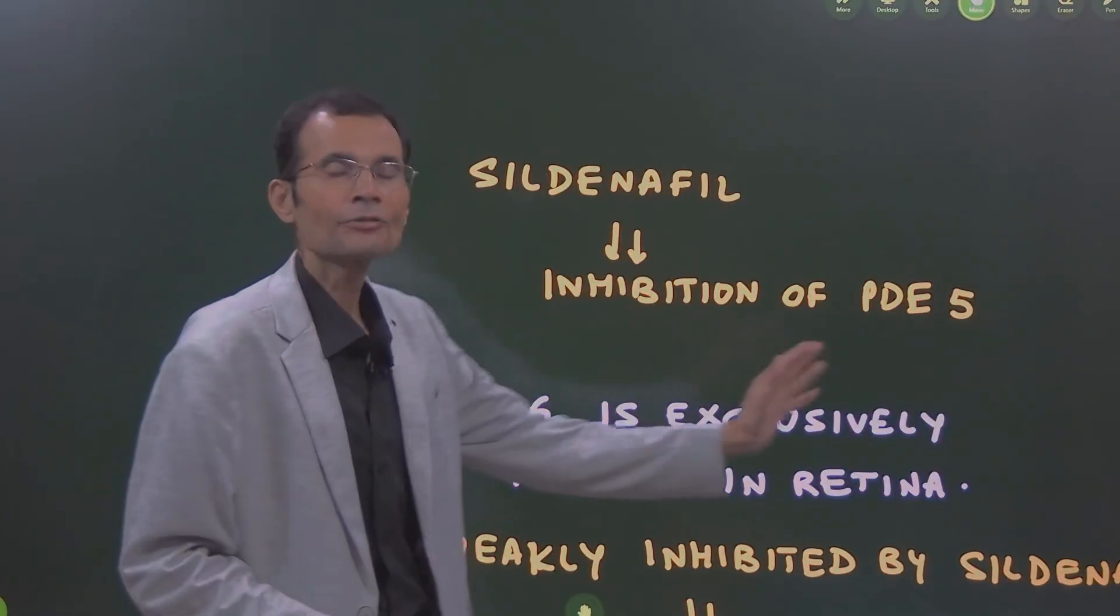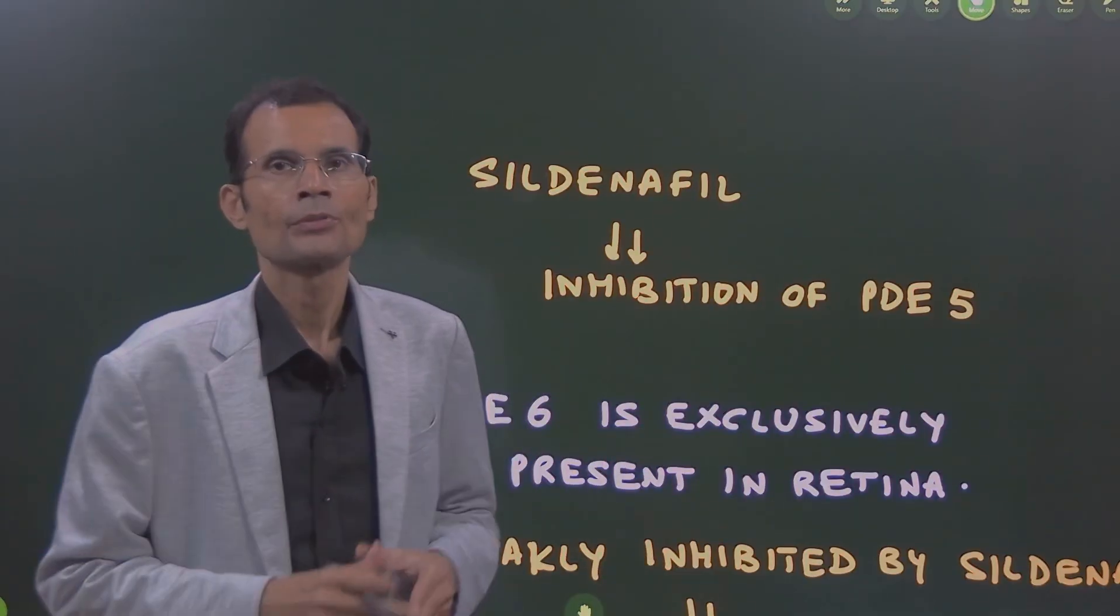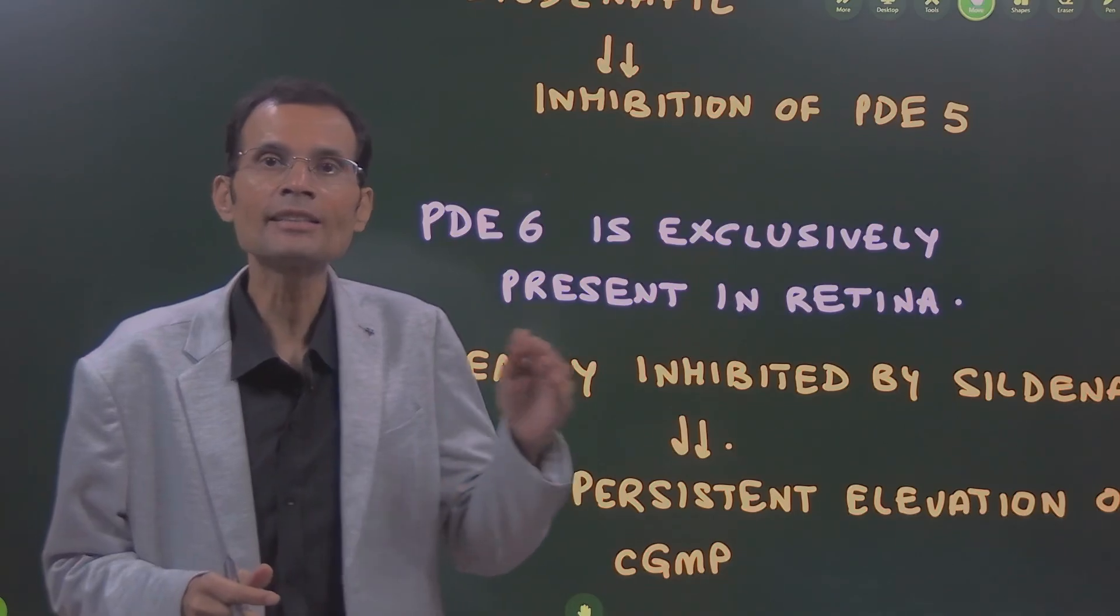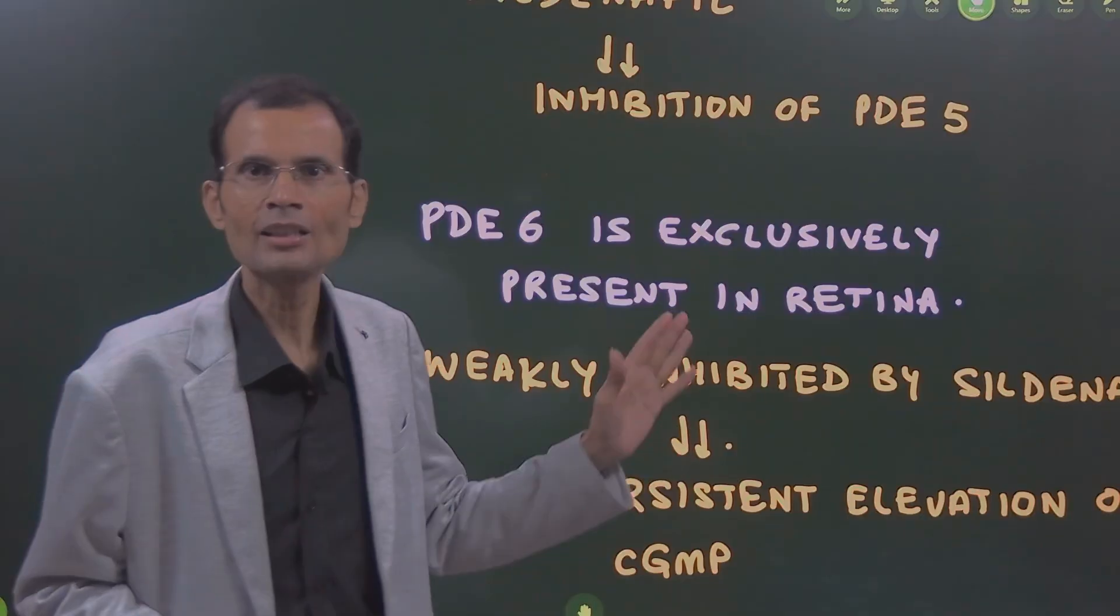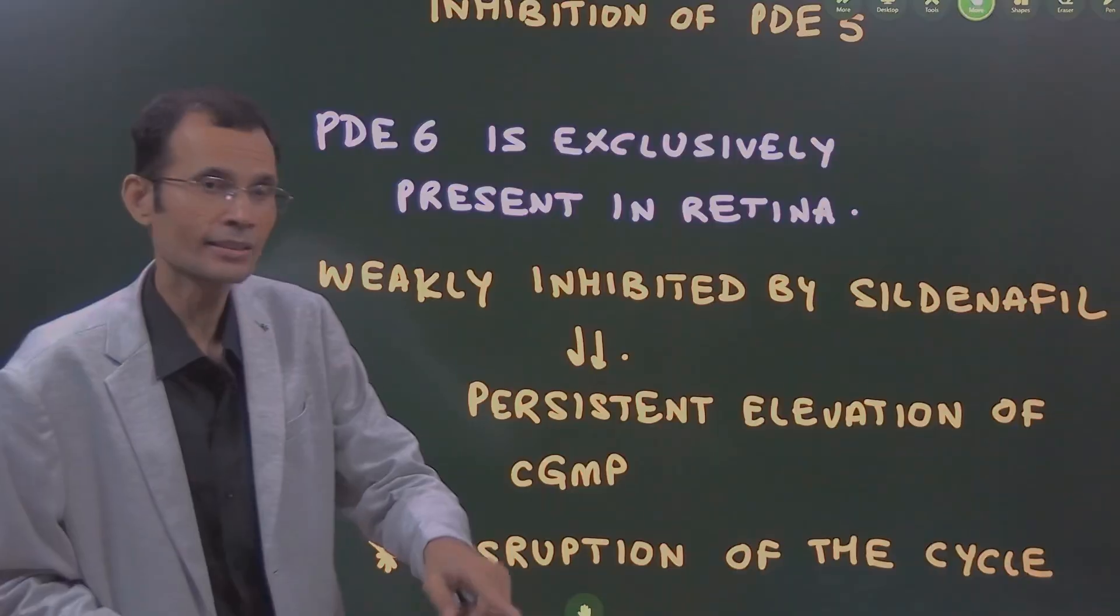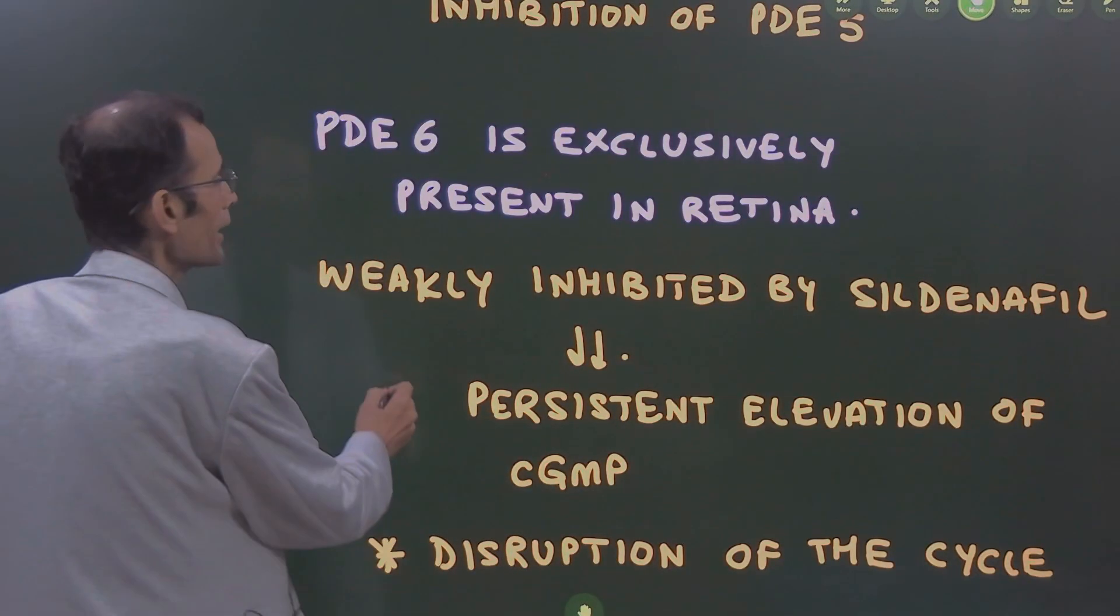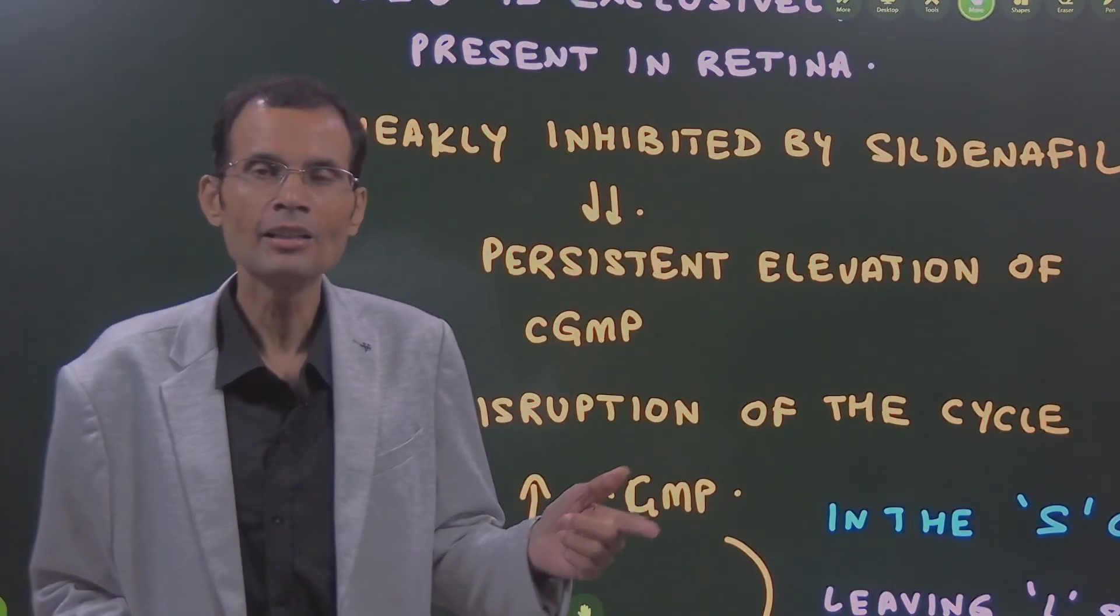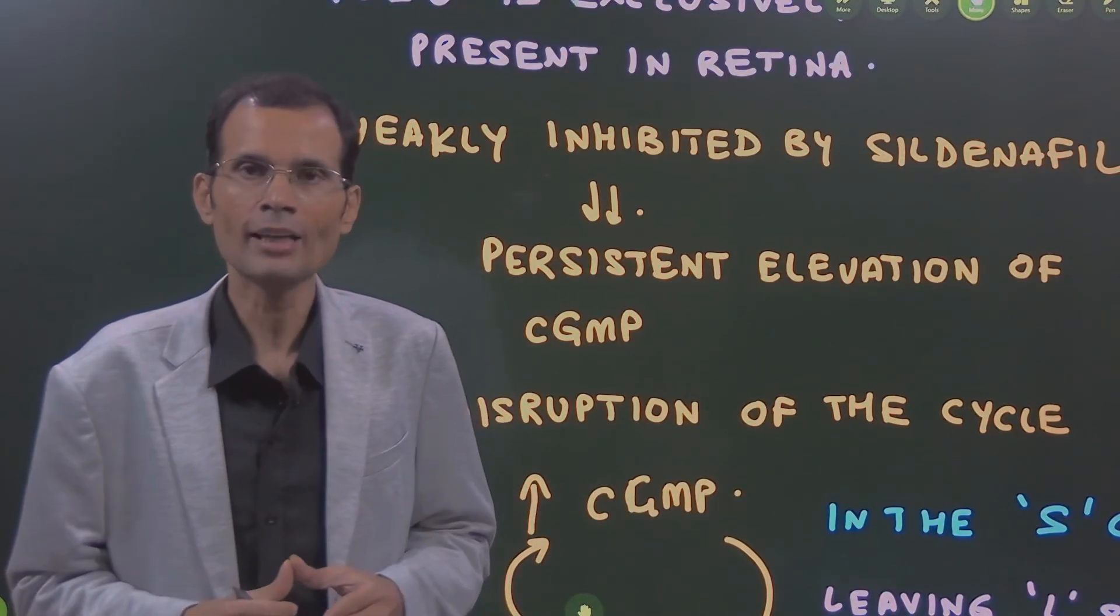Sildenafil, as we saw, is an inhibitor of PDE5, but there is also another phosphodiesterase enzyme, PDE6, which is exclusively present in the retina, in the rods and cones. This enzyme PDE6 is weakly inhibited by sildenafil, and if it is inhibited, it will result in elevated levels of cyclic GMP.